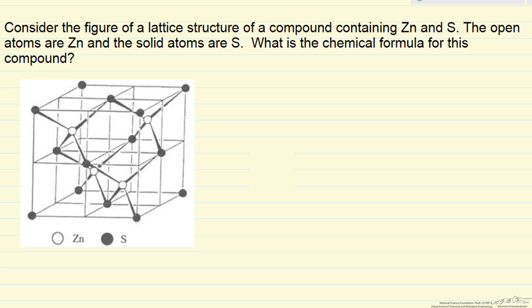We're given a structure, in this case for a compound containing zinc and sulfur. The solid circles are sulfur and the open ones are zinc. The question is what's the chemical formula for this compound.